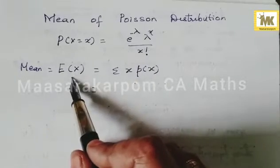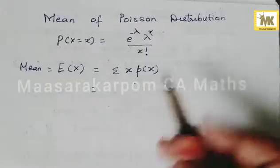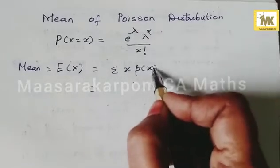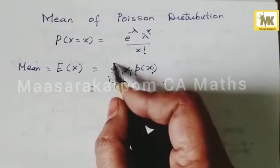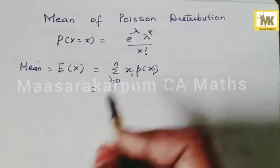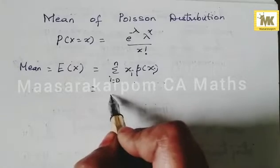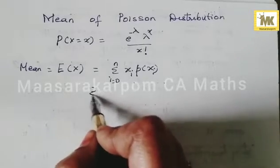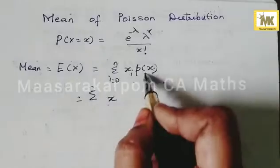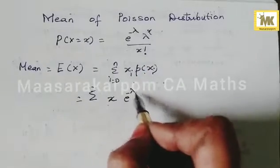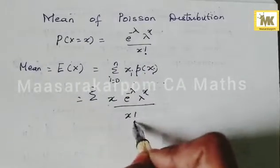Mean is the expectation of x, which is equal to sigma x·p(x_i) for i equal to 0 to n. That is equal to sigma x · e^{-λ} · λ^x / x!.